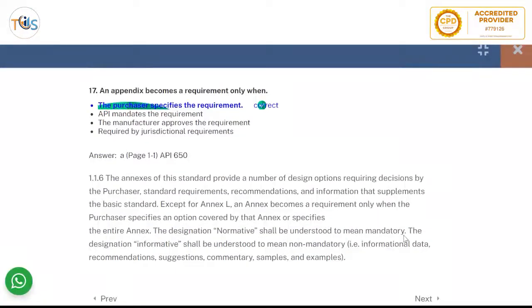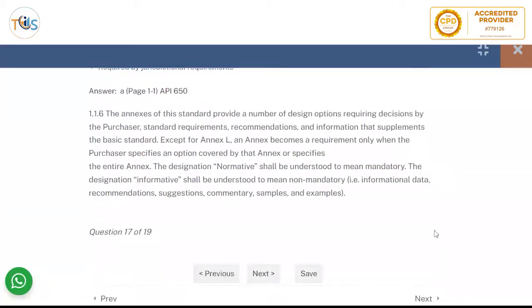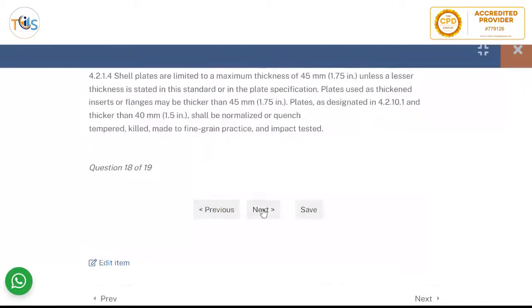An appendix becomes a requirement only when the purchaser specifies the requirement. So obviously the purchase order supersedes the codes, standards, and recommended practices as mentioned in it. But as long as it does not violate any code requirement. So when it becomes a requirement or become mandatory, any annexes of say API 650 is not violating the code. It's just something over and extra.